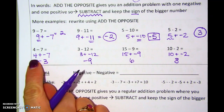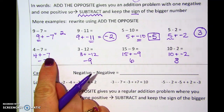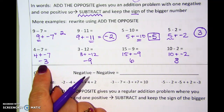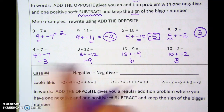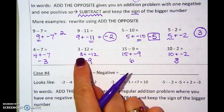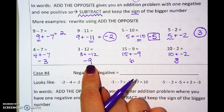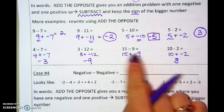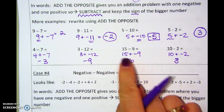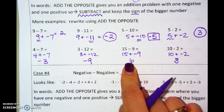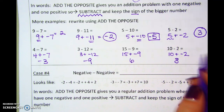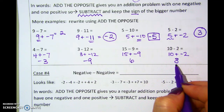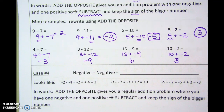For the first one, I rewrote it as four plus negative seven — subtract the numbers to get three, the negative seven is bigger, so negative three. Three plus negative twelve: subtract to get nine, and the negative is bigger, so negative nine. Fifteen plus negative nine: subtract to get six, the positive is bigger, so positive six. And ten plus negative two: subtract to get eight, the positive was bigger, so positive eight.